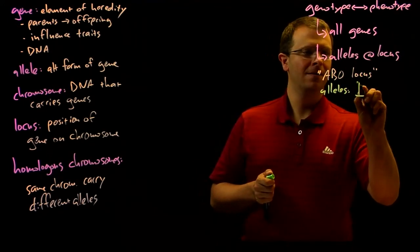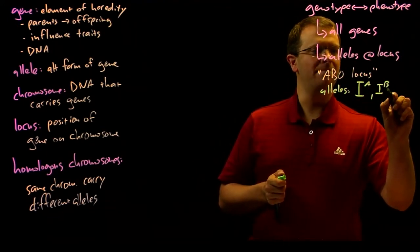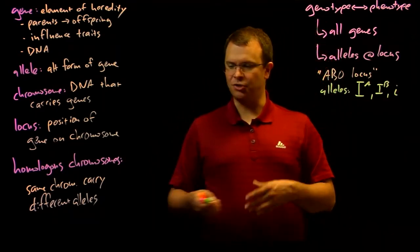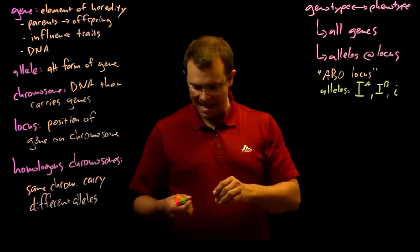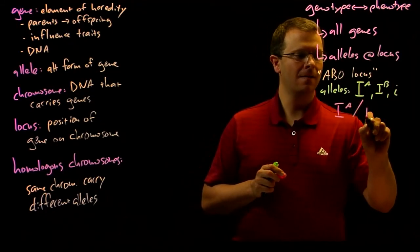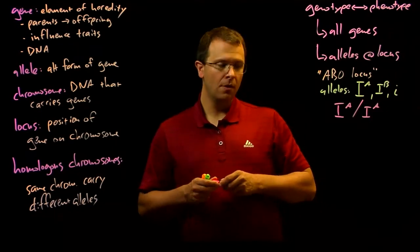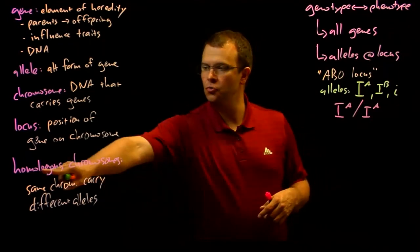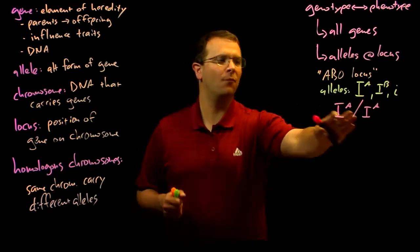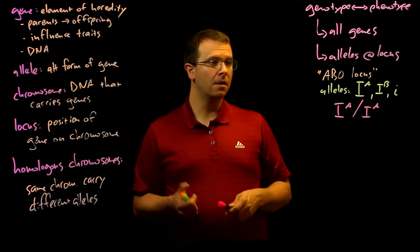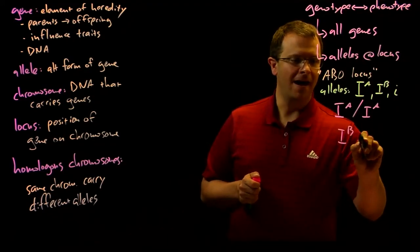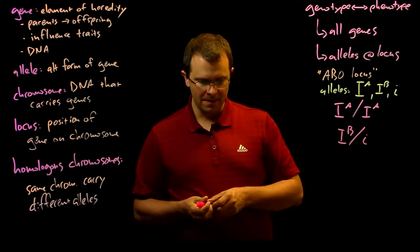Those are Ia, Ib, and little i. And so a person's genotype at the ABO locus could be big Ia, big Ia, for example, because there are two homologous chromosomes. And so there's one of these alleles on one chromosome and one of these alleles on the other chromosome. Or that person's genotype could be Ib slash little i.